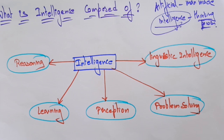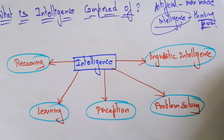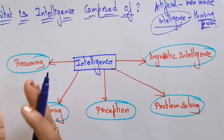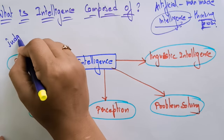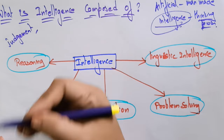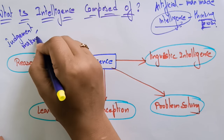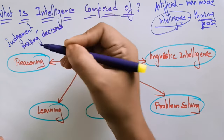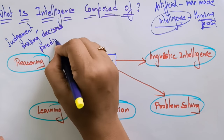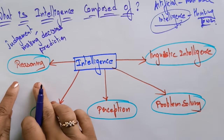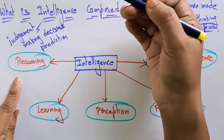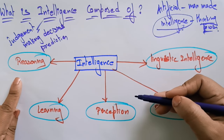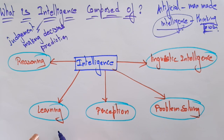So what is reasoning? Reasoning is a set of processes that enables us to provide the basis for judgment, making decisions, and even prediction. So reasoning is a set of processes that enables us to take decisions, provide the basis for judgment, making decisions, and prediction.